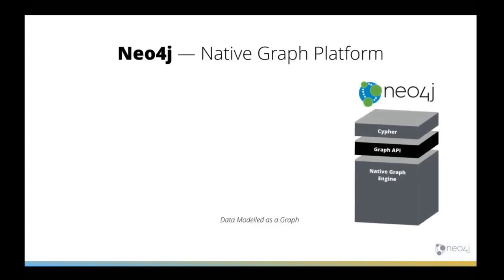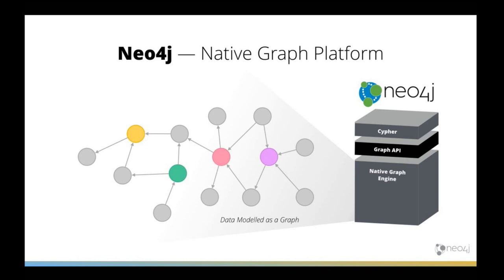Neo4j as a native graph platform: we have a graph engine that stores all of your data, a graph traversal API that sits on top of that, and then there's the Cypher query language. It's a declarative query language optimized for graphs — very similar to SQL, easy to learn, but really optimized for the types of queries you need to do when your data is in a graph. All of your data is modeled and stored as a graph in the native graph engine, meaning you have nodes and relationships, and also properties on those nodes and relationships — which is why this is called the property graph.